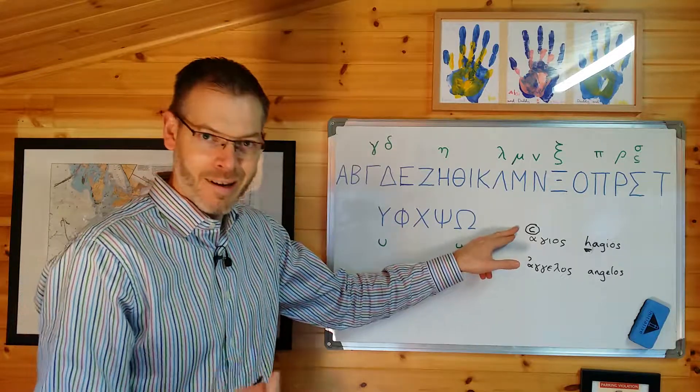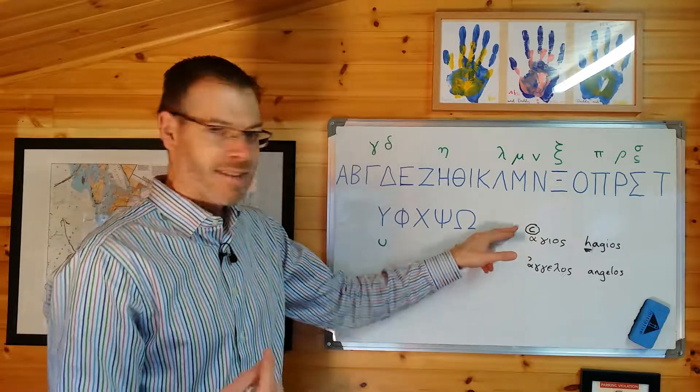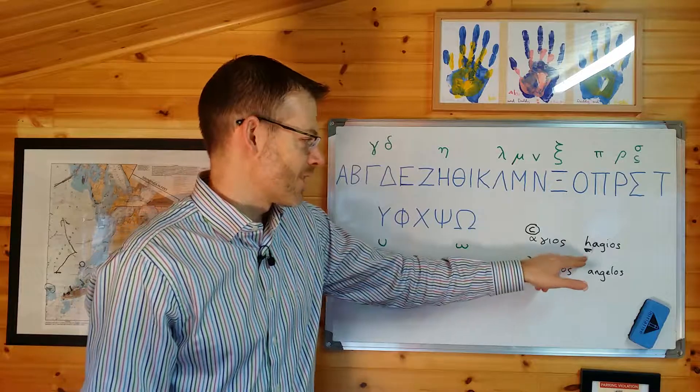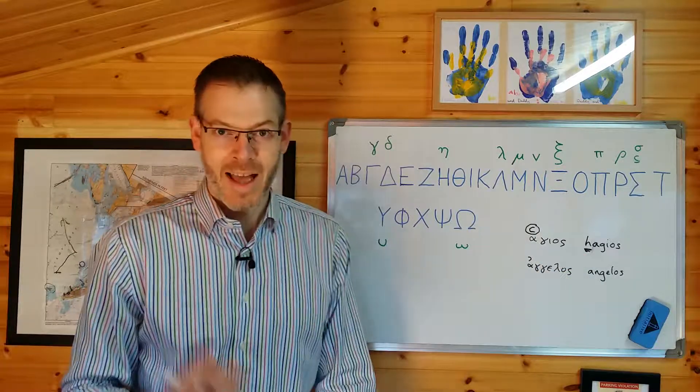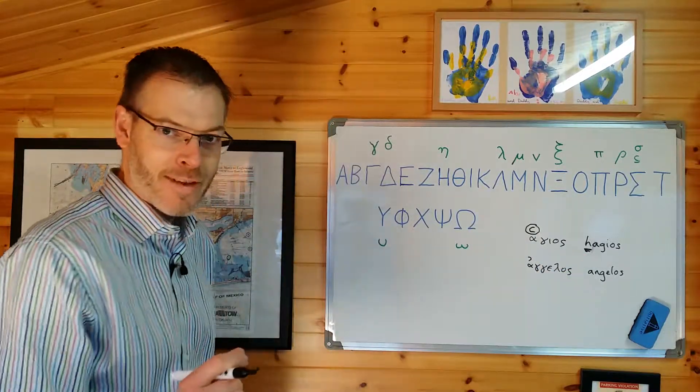This is rough — it looks like a C, and therefore it makes a sound like an H, and you transliterate it as an H: hagios.